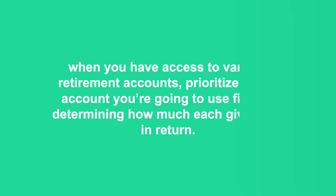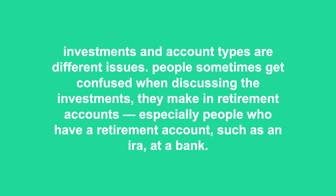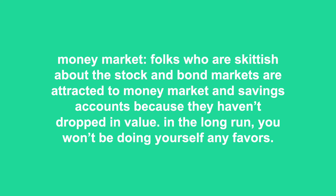Investments and account types are different issues. People sometimes get confused when discussing the investments they make in retirement accounts, especially those who have a retirement account such as an IRA at a bank. You can have your IRA at a variety of financial institutions — a mutual fund company or brokerage firm. At each financial institution, you can choose among the firm's investment options for investing your IRA money. No-load, or commission-free, mutual fund and discount brokerage firms are your best bets for establishing a retirement account. In some company-sponsored plans such as 401ks, you're limited to a short list of investment choices.